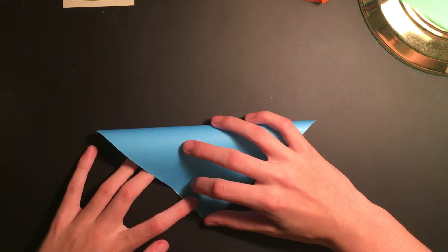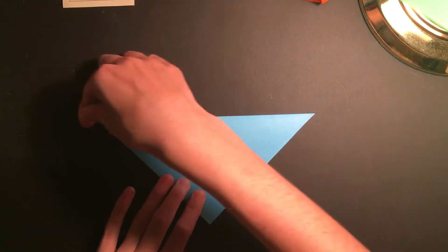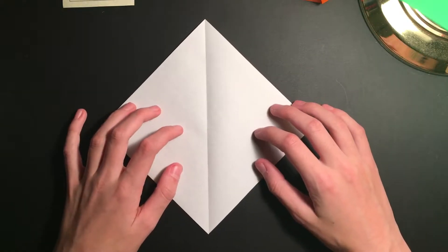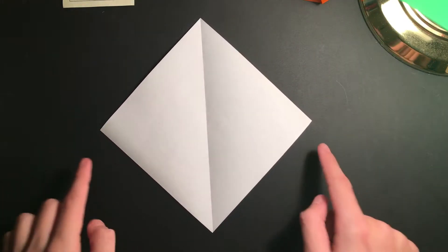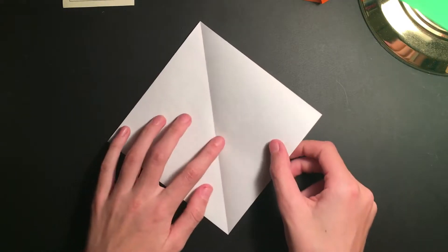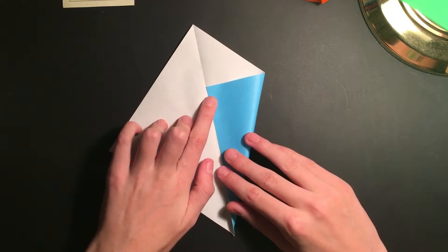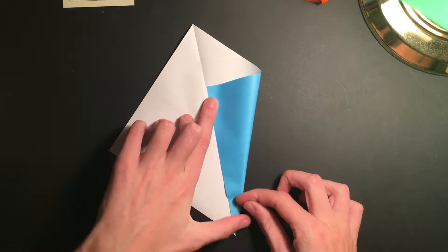We're going to be starting out with a kite base, and we will be using this in more tutorials in the future, so it's best to learn now. Go ahead and turn the paper so that the line is running from top to bottom, and we're going to bring these two edges to the center crease, which we've just created. We want to get a nice point at the bottom of our sheet here.